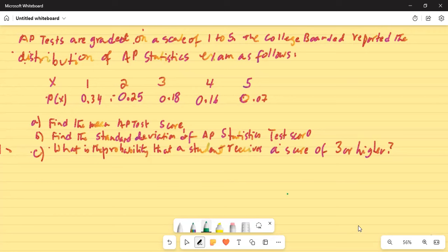X is the score 1, 2, 3, 4, and 5 and the corresponding probabilities are listed. Find the mean AP test score for stats. Find the standard deviation of AP Statistics test score and what is the probability that a student receives a score of 3 or higher?